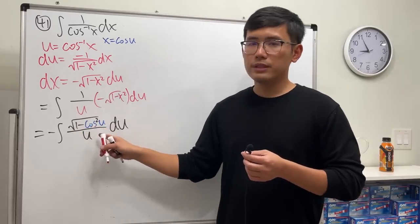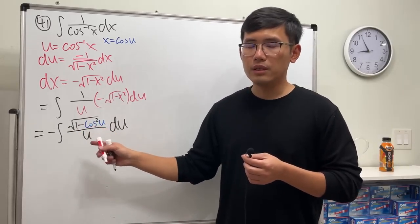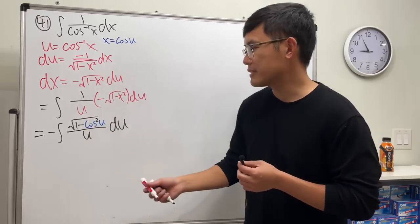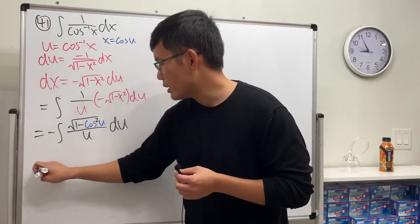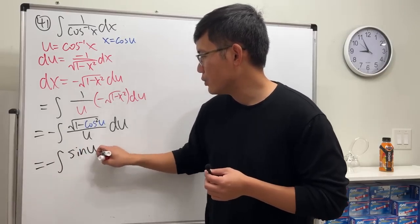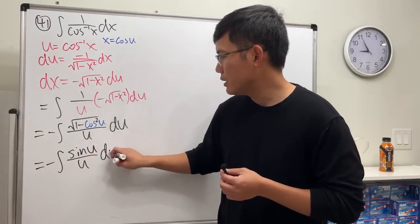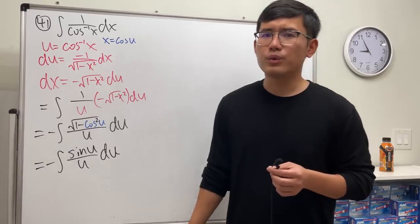1 minus cosine squared is sine squared. In the square root, they cancel, so we just have sine. So ladies and gentlemen, this right here is negative integral of sine u over u du. But what is this integral though?